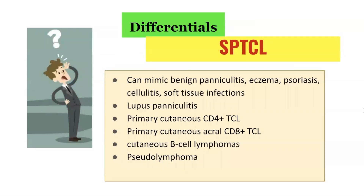Other differentials of subcutaneous panniculitis-like T-cell lymphoma include benign panniculitis, eczema, psoriasis, cellulitis, and soft tissue infections. As alluded to earlier, it can look like lupus panniculitis. Various other forms of cutaneous T-cell lymphomas are in the differential, including primary cutaneous CD4-positive T-cell lymphoma and primary cutaneous acral CD8-positive T-cell lymphoma. Cutaneous B-cell lymphomas and pseudolymphomas are certainly in the differential as well.